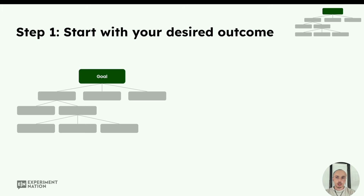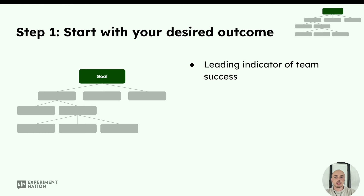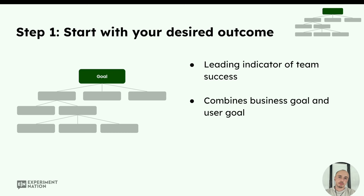Step one: we start with our desired outcome at the top of our Opportunity Solution Tree. This is the goal that we're working towards as a team, and this is how we show that we're driving business value. It's a leading indicator of the team's success. But it doesn't just drive business value — we also have users that we want to make happy. So I like to personally look at a combined goal that combines the business goal with the user goal.